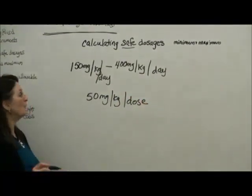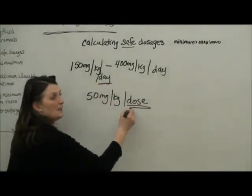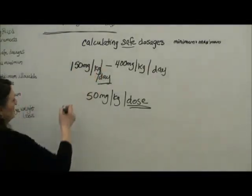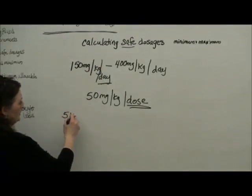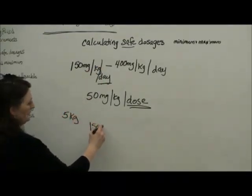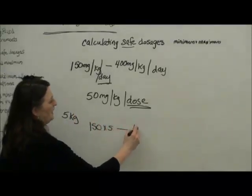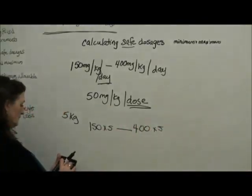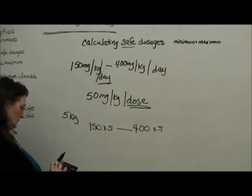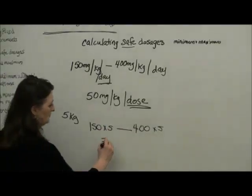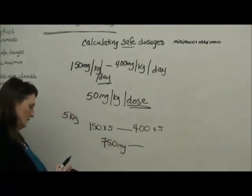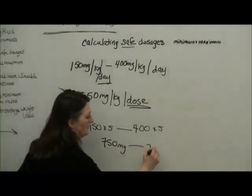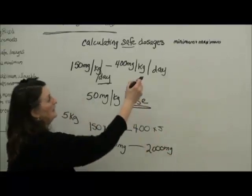So it's very important to look at what time frame you're working with. So here, let's have a simple 5 kilo patient. 150 times 5 up to a maximum of 400 times 5. 5 times 150, so what do you get here? 750 milligrams to a max of 2,000 milligrams in a day.